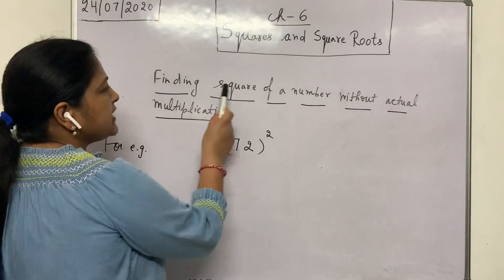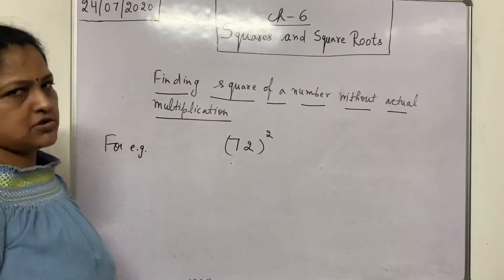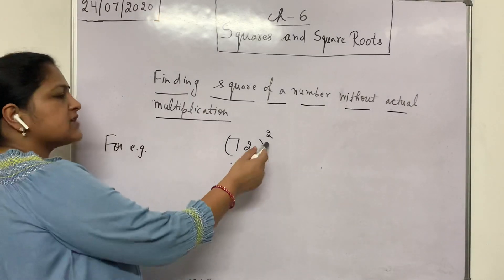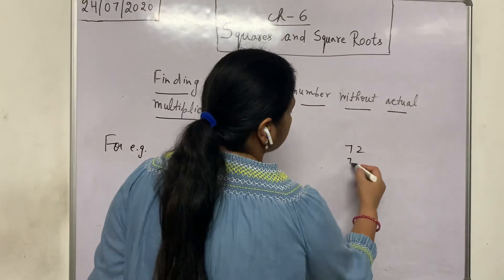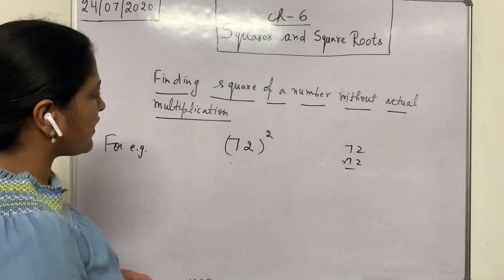Another topic: finding square of a number without actual multiplication. Otherwise, to find out its square, we have to multiply 72 with 72. But is there any other method by which we can find out its square?